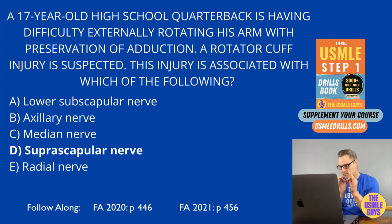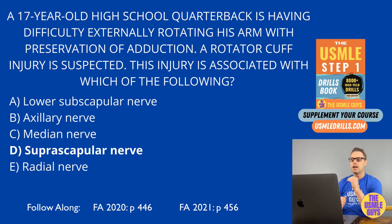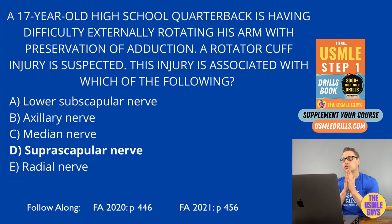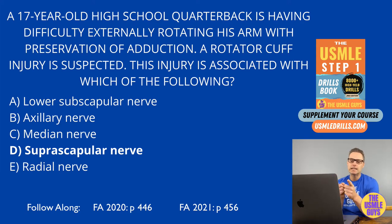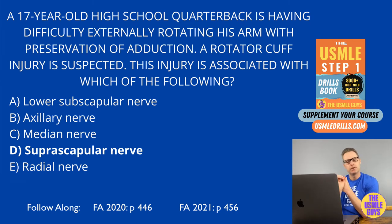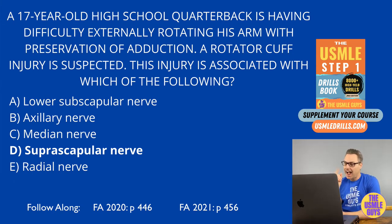From 0 to 15 degrees of abduction, the supraspinatus is responsible for movement. Then from 15 to 90 degrees, the deltoid takes over as the major player. Don't forget that the deltoid is innervated by the axillary nerve.